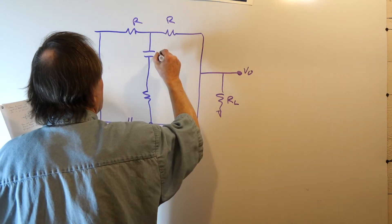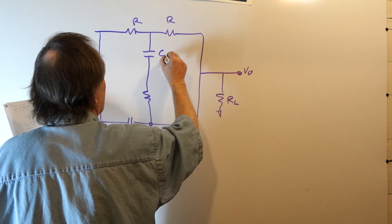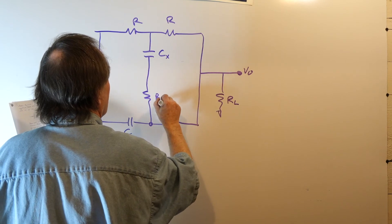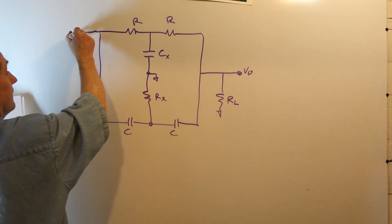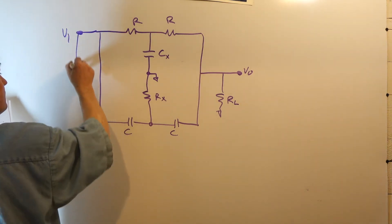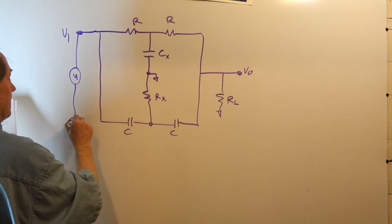I've redrawn the network. You'll see this is completely equivalent to what we had before. There's my ground connection, common ground. And here's V1. We're driving it with some voltage source.